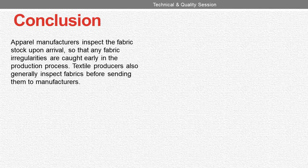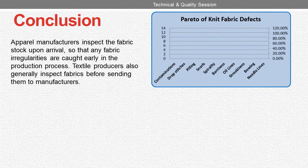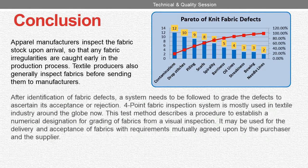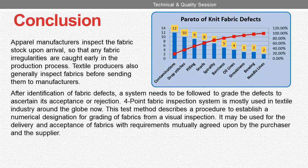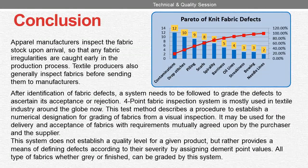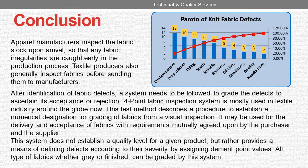Conclusion. Apparel manufacturers inspect the fabric stock upon arrival so that any fabric irregularities are caught early in the production process. Textile producers also generally inspect fabrics before sending them to manufacturers. After identification of fabric defects, a system needs to be followed to grade the defects and ascertain their acceptance or rejection. The 4-point fabric inspection system is mostly used in the textile industry around the globe. This test method describes a procedure to establish a numerical designation for grading fabrics from a visual inspection. It may be used for the delivery and acceptance of fabrics with requirements mutually agreed upon by the purchaser and the supplier. This system does not establish a quality level for a given product, but rather provides a means of defining defects according to their severity by assigning demerit point values. All types of fabrics, whether grey or finished, can be graded by this system.